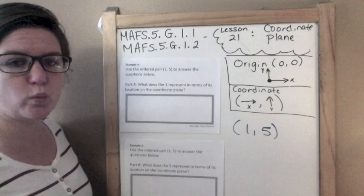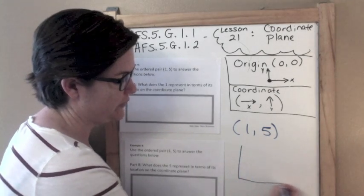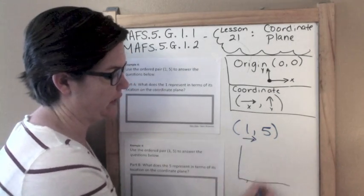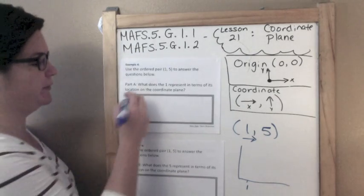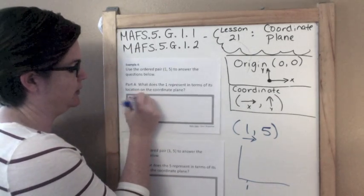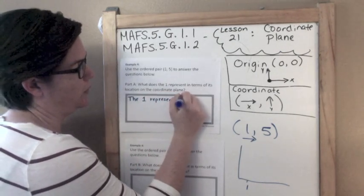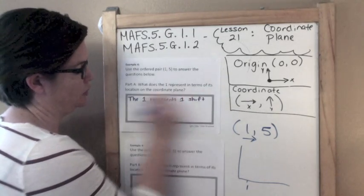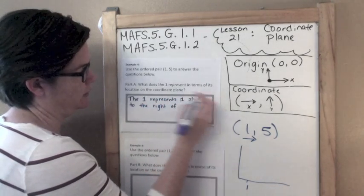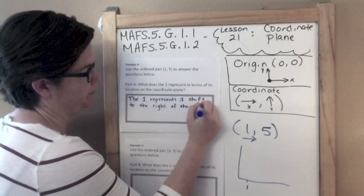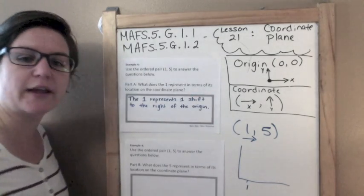Part A, what does the one represent in terms of its location on the coordinate plane? So the one, if we had a coordinate plane, would be how many we're going to the right. So this one means we're going to shift to the right one unit from the origin. The one represents one shift to the right of the origin. Maybe I should say one shift. Yeah, that's good. One shift, yeah.